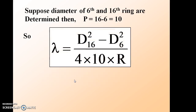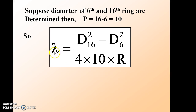As an example, suppose the diameters of the 6th and 16th dark rings are determined experimentally. Then p, the difference between the 16th and 6th dark rings, equals 10. The formula becomes λ equals d_16 squared minus d_6 squared, divided by 4 times 10 times r. Here n corresponds to the 6th dark ring and (n+p) to the 16th dark ring, so p equals 16 minus 6 equals 10.